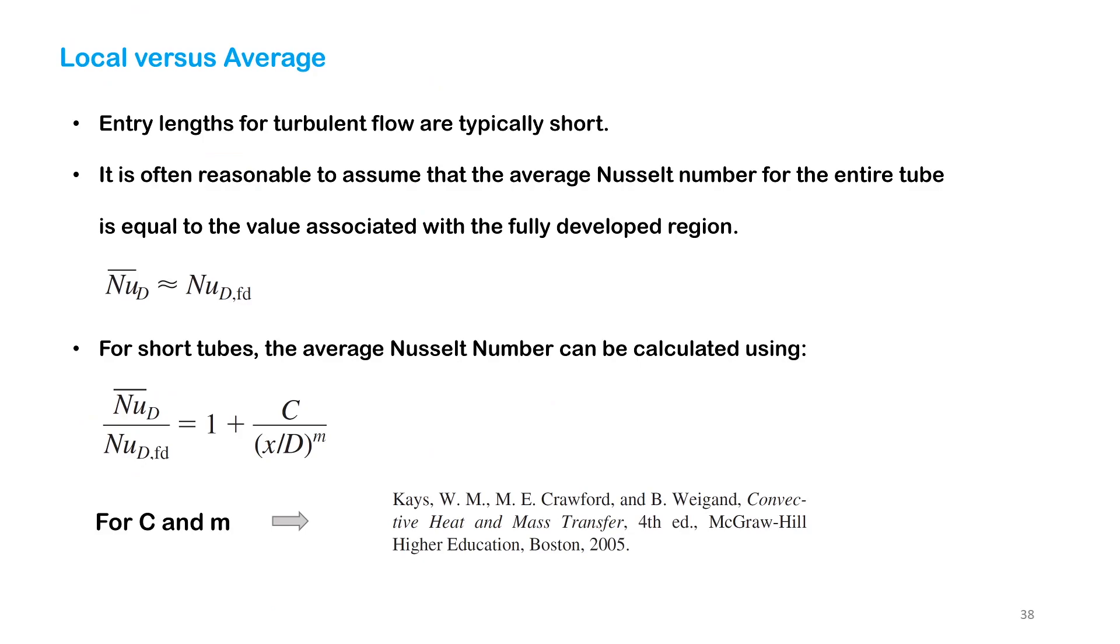In general, if you have a pipe, the entrance region is usually short compared to the overall length. What you do is calculate the Nusselt number at the entrance region and assume it is the average for everywhere.